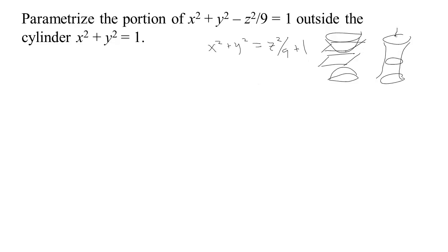Now we can parametrize this a lot like we did the cone, using cylindrical coordinates — that's probably the most natural way. The reason I chose cylindrical is because it has symmetry around an axis, in particular around the z axis. You could always just rotate or change the names on the variables so that the axis of symmetry was the z axis. So we want the portion outside the cylinder x squared plus y squared equals one.